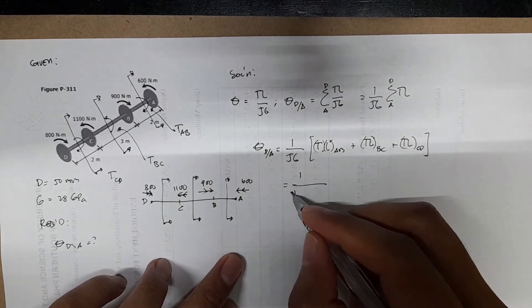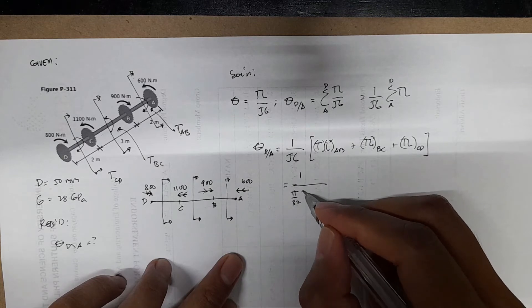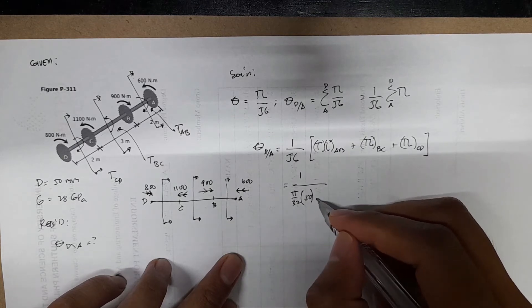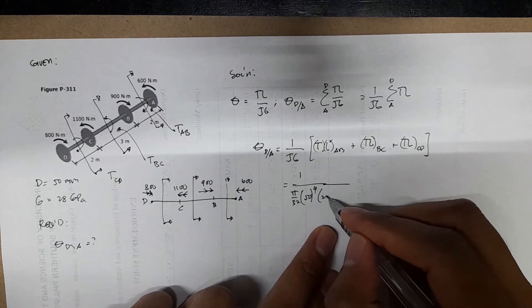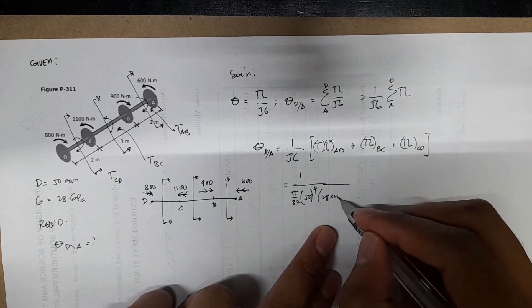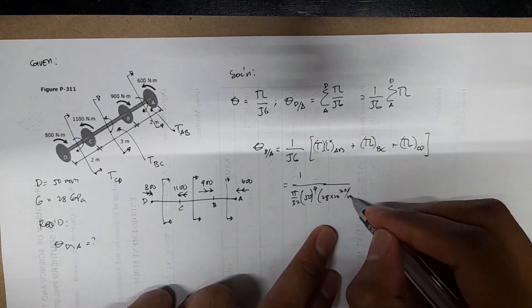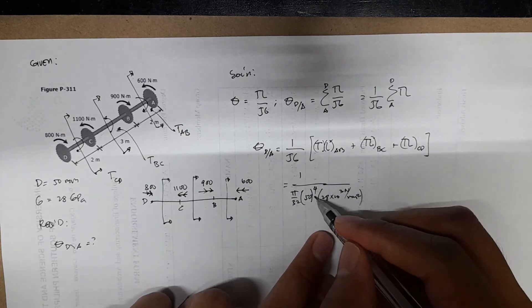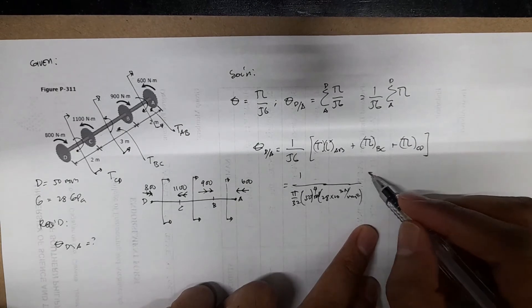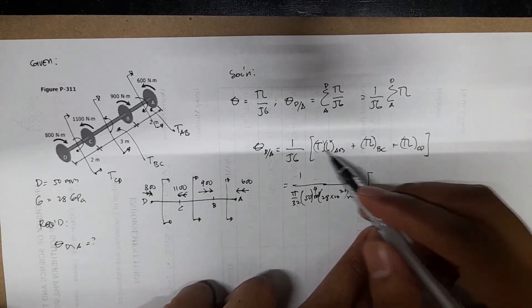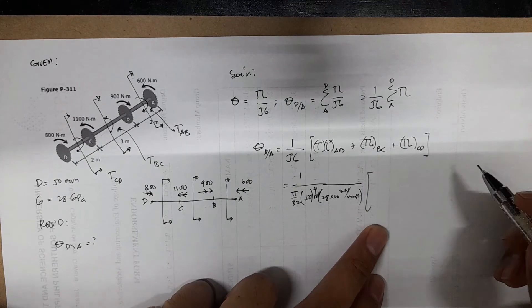So we'll have J equals pi over 32 times 50 to the fourth. Then you have the G, which is 28 times 10 to the 3 newton per meter squared. This is in mm^4. Then we'll have the TL AB, TL BC, and TL CD.